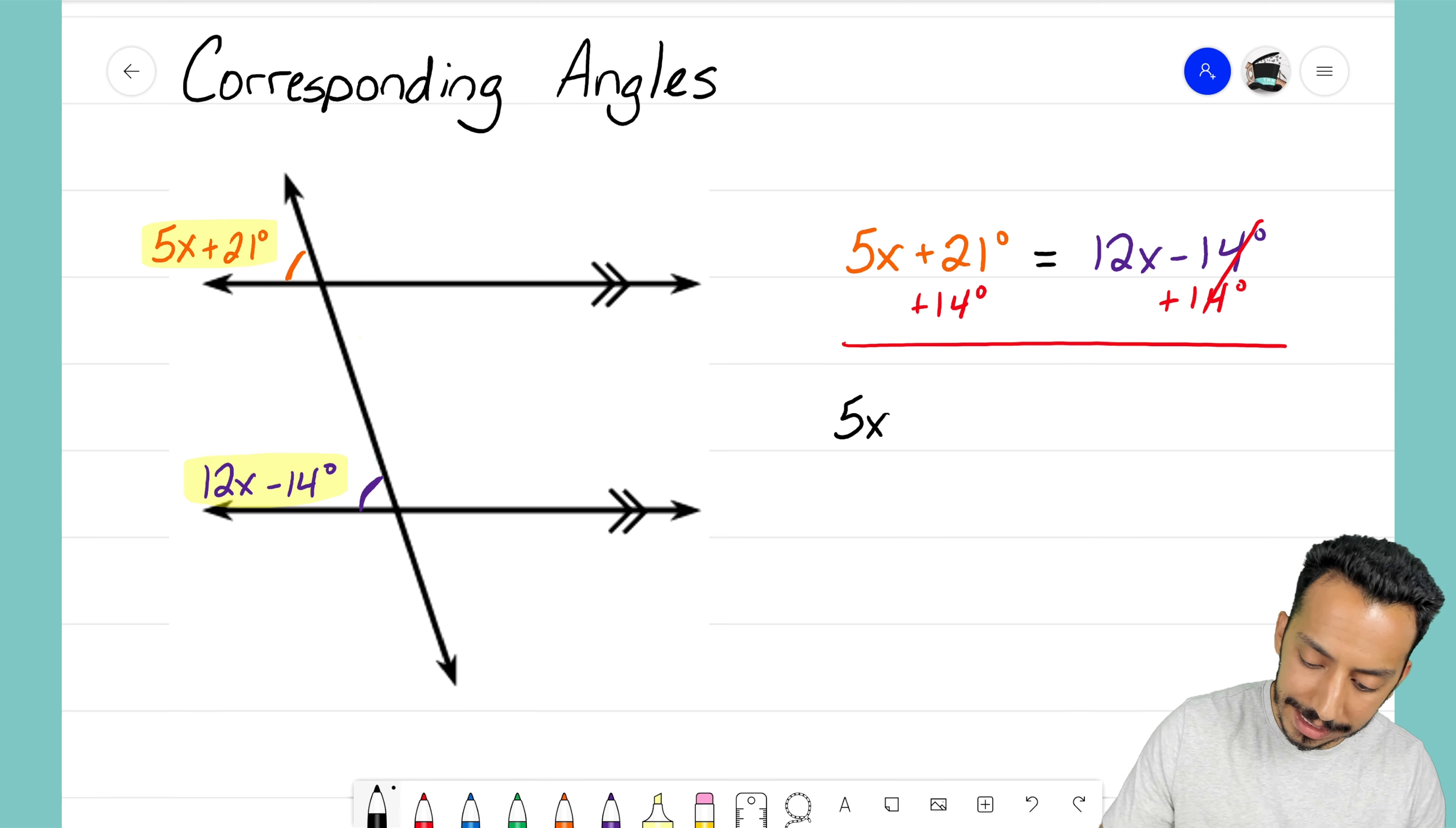I'll be left with 5x. 21 plus 14 degrees is going to make 35 degrees. That's going to equal just 12x because those zeroed out. All righty, I almost have x by itself.